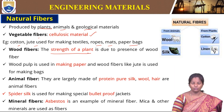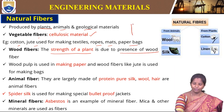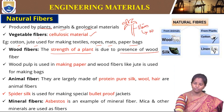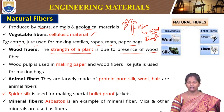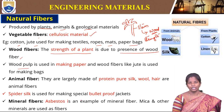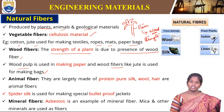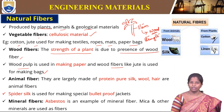Wood fibers give strength to the plant due to the presence of wood. For example, in a plant the stem, after growth, forms wood, which gives the plant its structural strength. From this we can obtain fibers called wood fibers. This wood fiber or wood pulp is used in making paper, and wood fibers are used like jute for making bags.